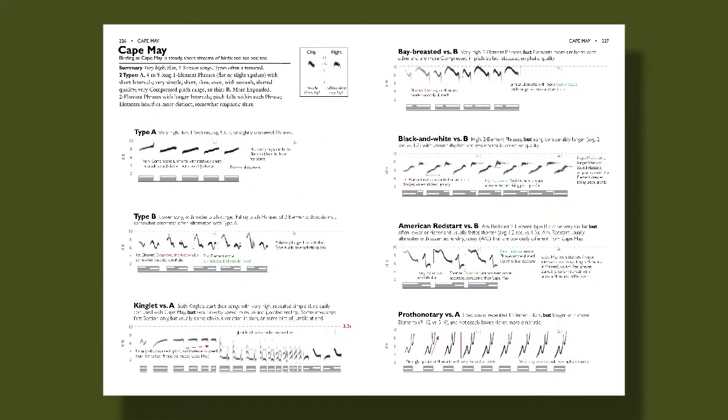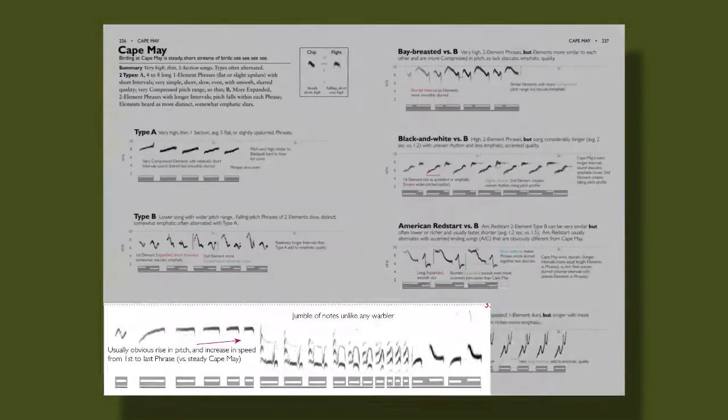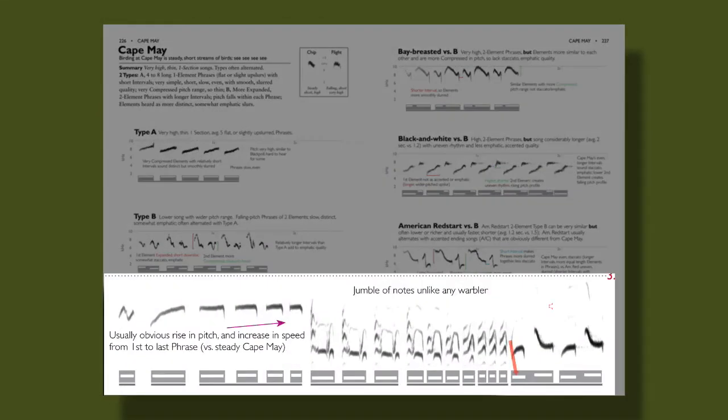At the heart of the system is the analysis of a bird's song and the process of breaking it down into different parts, what we call elements, phrases, and sections.